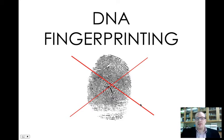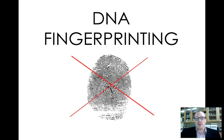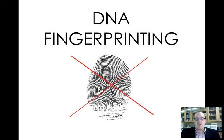What you're seeing right here is an imprint of a fingerprint, but DNA fingerprinting has nothing to do with your actual physical fingerprint. Your fingerprints are unique patterns of swirls and lines and deltas and other structures on the tips of your fingers. When you touch something, you leave behind a fingerprint, and fingerprints are commonly used in crime scene analysis to identify who was present at the scene of a crime.